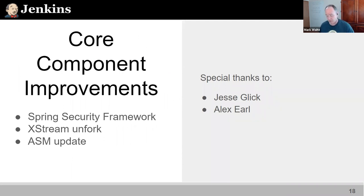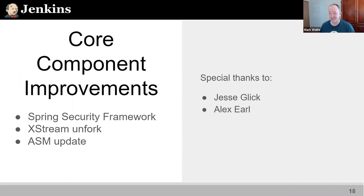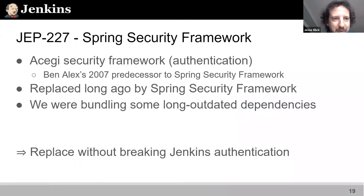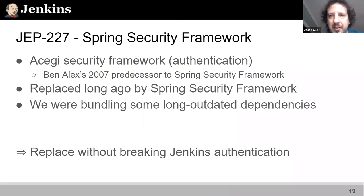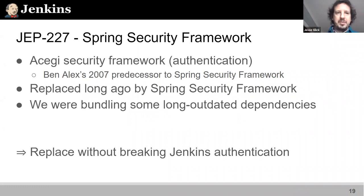Jesse, would you like to take on core component improvements? The first one was Jenkins Enhancement Proposal number 227. The idea is that since early days in the Jenkins project, going back to Hudson days, it had been using a library called Acegi Security - an old Java-based security framework. Jenkins was using a lot of the APIs defined in that framework to handle every aspect of login and authentication, basically anything you would configure under the security realm in the Configure Global Security screen.